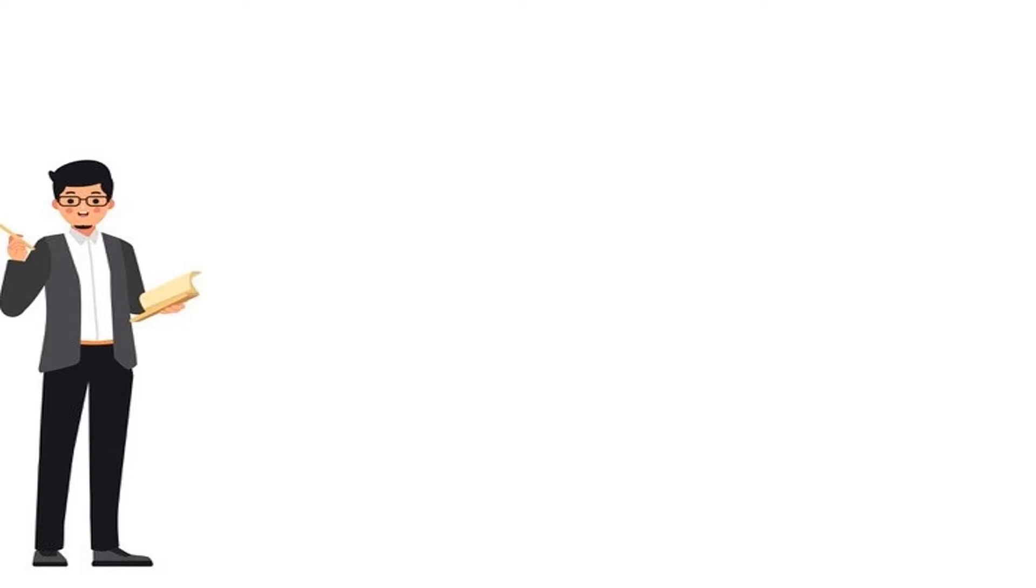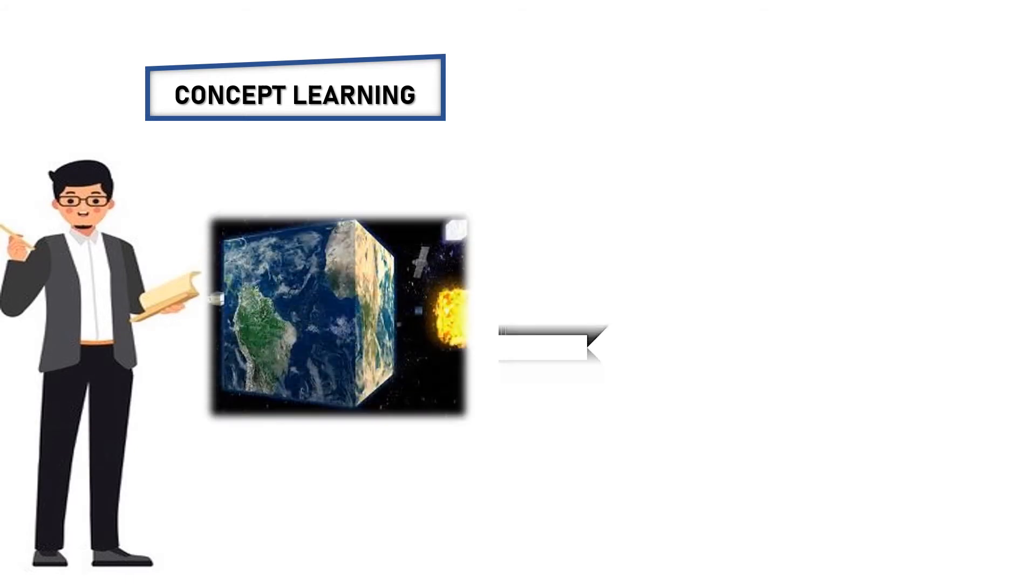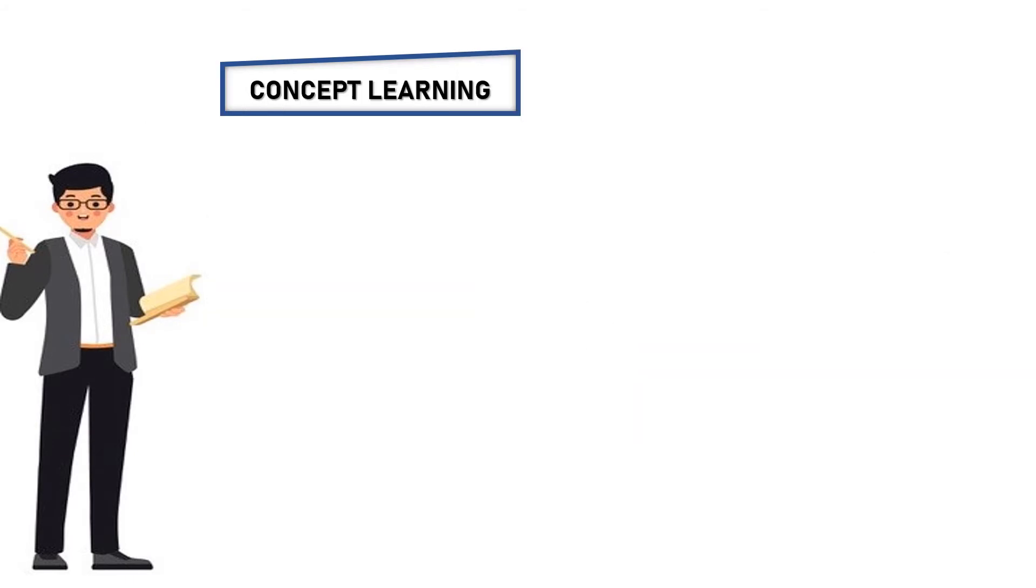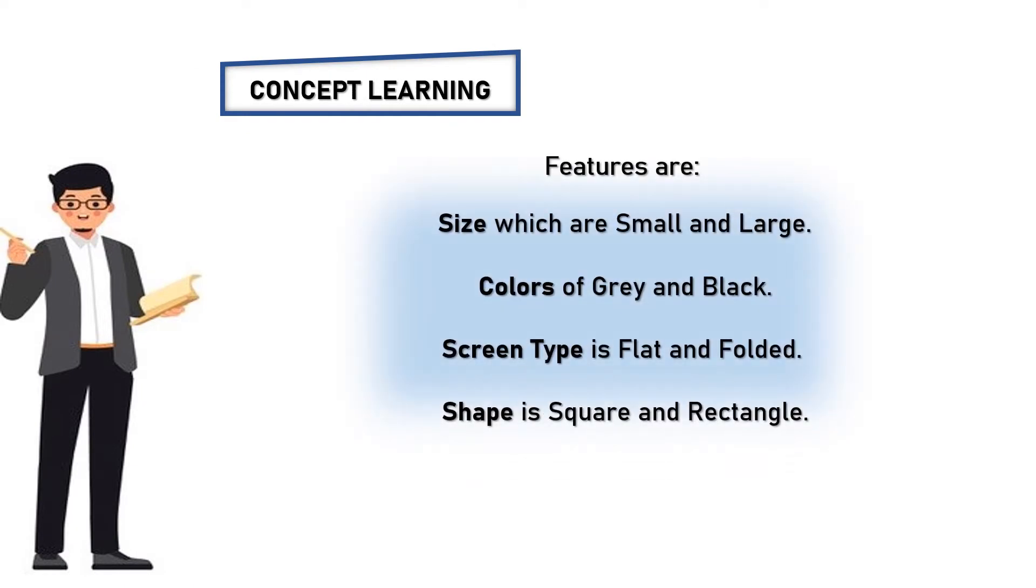Next coming to the topic of concept learning. Example for concept learning is: consider a square as a universe where it contains smartphones, tablets, and phones. For those, features are: size, which are small and large; colors of gray and black; screen type, is flat and folded; shape is square and rectangle. Here, size is considered as X1, color is considered as X2, screen type is considered as X3, shape is considered as X4.